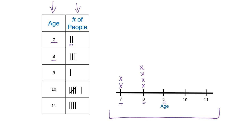Now I move on to nine years old. If I look back on my tally chart, I see that there's one person who is nine years old. Then I do the same thing for ten. When I look at my tally chart, I notice this symbol — I know right away that's a group of five. So I don't have to count all my tally marks because I know that's a group of five, plus one more: I have six people who are ten years old. One, two, three, four, five, six.